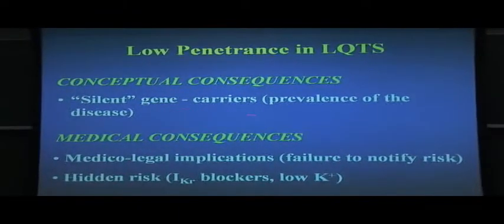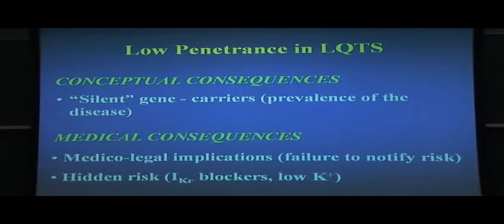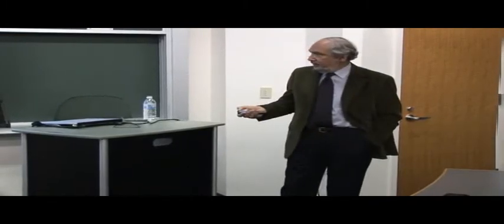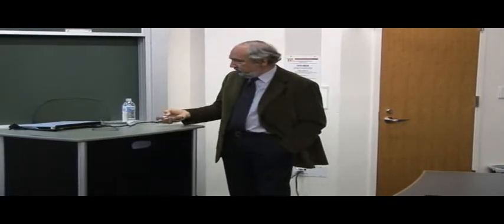In this family, for instance, there was one sudden death. This was the only person showing a long QT on the ECG. Based on clinical diagnosis, you would have said that this is a long QT patient and everyone else doesn't have it. But with the molecular diagnosis, we recognized these individuals as mutation carriers. This is a major thing because these individuals, even if they have a normal QT, while they are at lower risk of developing events, cannot be regarded as totally free of risk. They can become at extremely high risk if they lose potassium or if they are treated with one of the many, even non-cardiovascular drugs, that block the IKr current. Therefore, the low penetrance in long QT syndrome carries major conceptual consequences. On the one hand, it points to the existence of silent gene mutation carriers, which affects the prevalence of the disease, but it also has medical-legal implications because by not making the diagnosis, one fails to notify risk. Genotyping is no longer a research tool. It has to be regarded as an essential part of clinical management.